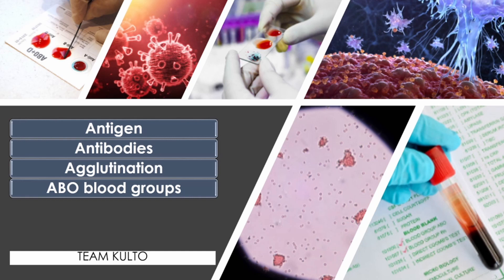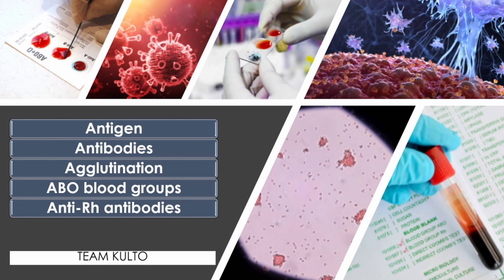The Rh blood groups are so named because one of the eight Rh antigens — agglutinogen D — was originally identified in rhesus monkeys, and later the same antigen was discovered in human beings. Most Americans are Rh positive, meaning their RBCs carry the Rh antigen. Unlike the antibodies of the ABO system, Rh antibodies are not automatically formed and present in the blood of Rh-negative individuals. Hemolysis — the rupture of RBCs — does not occur with the first transfusion because it takes time for the body to react and start making antibodies.